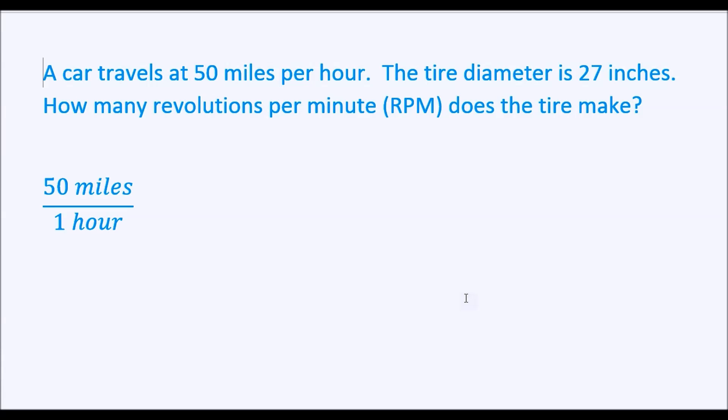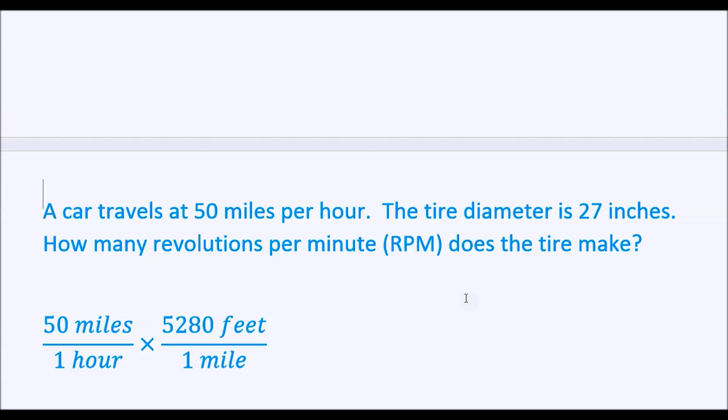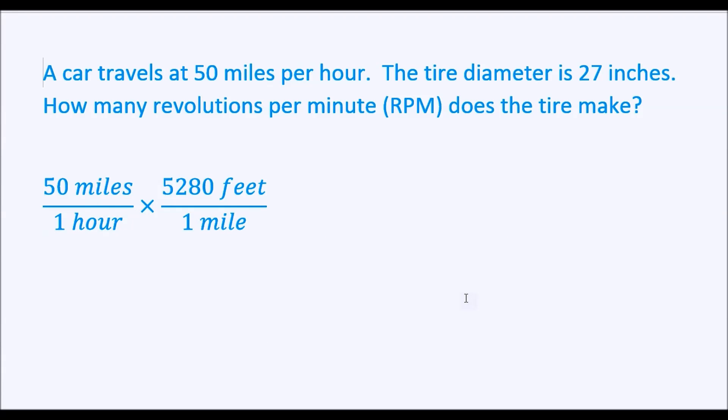So let's start out with what you're given, 50 miles per hour. And there's 5,280 feet per mile. And you can see your miles cancel out.